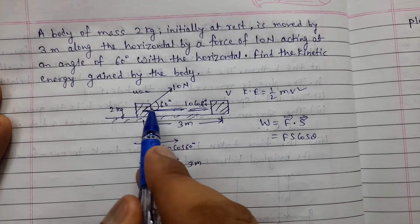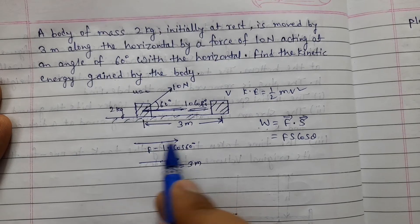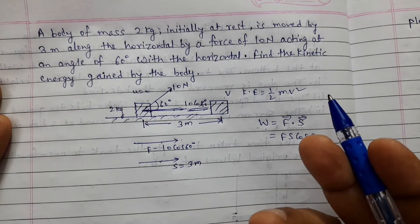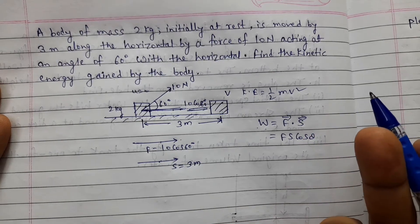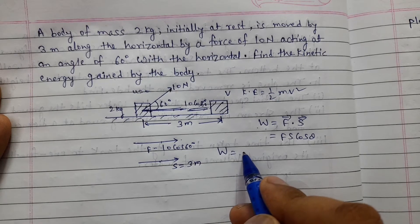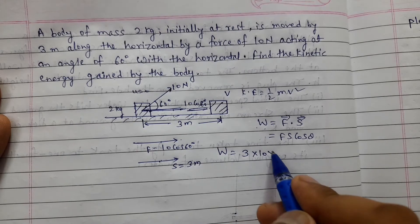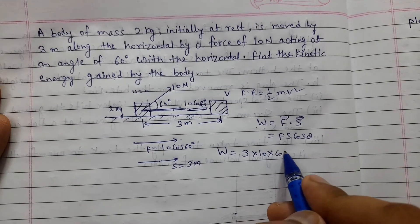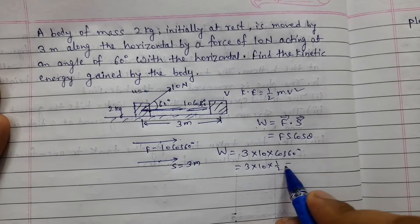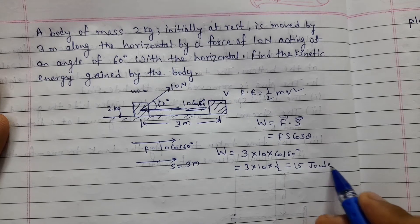If we make force components parallel to displacement, this angle is zero degree, and cos zero degree is 1. From the general angle, work done is 10 times 3 times cos 60 degrees. Cos 60 degrees value is half, so 3 into 10 into half equals 15. Work done is 15 joules.